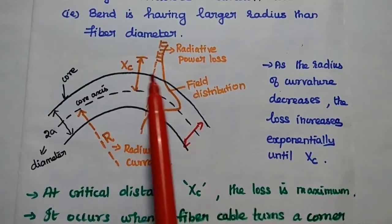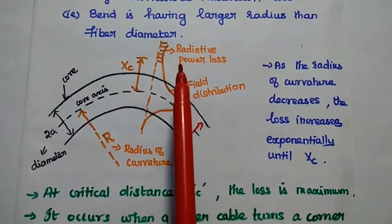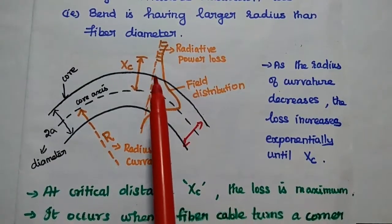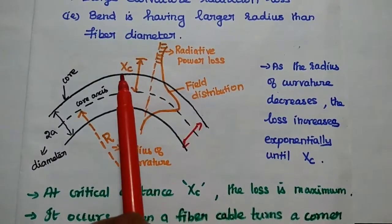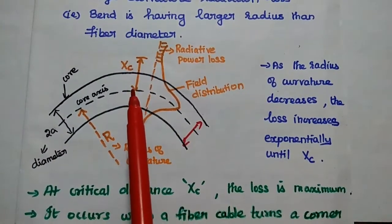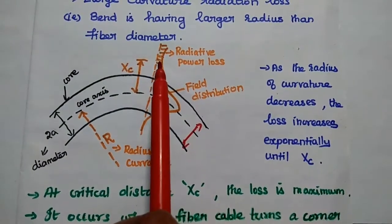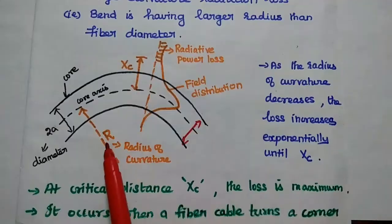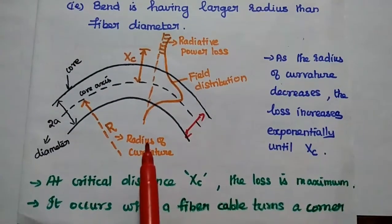Due to this curvature area, the radiative power is lost at a particular distance from this fiber axis. This distance is denoted as XC, that is the critical distance from the fiber axis. So, here the radiative power loss occurs. This R is nothing but the radius of curvature.